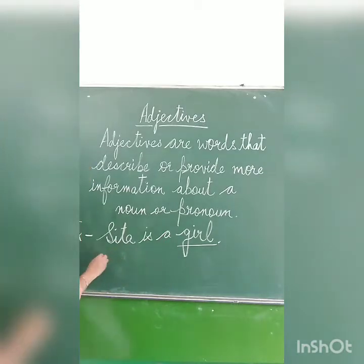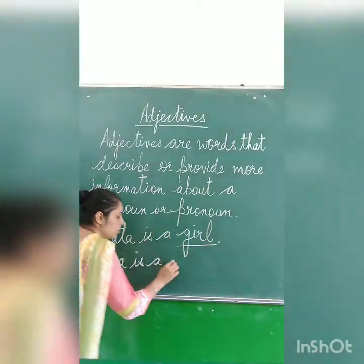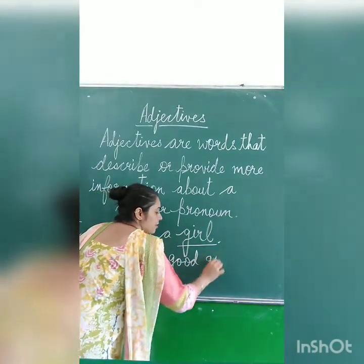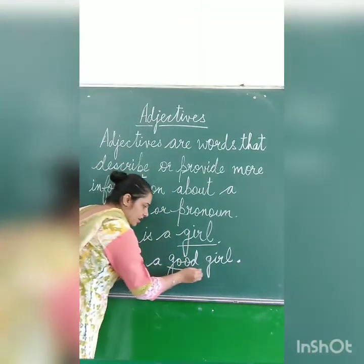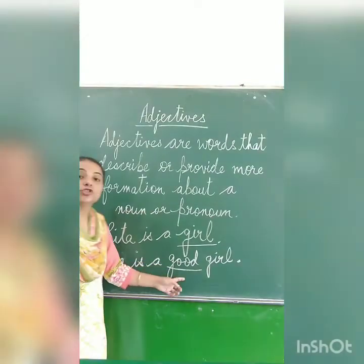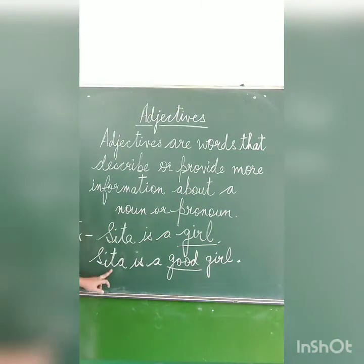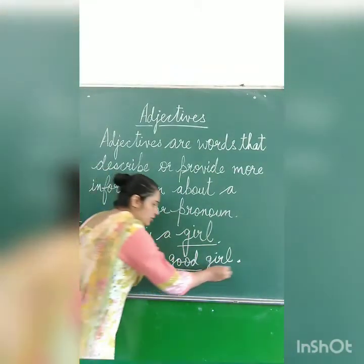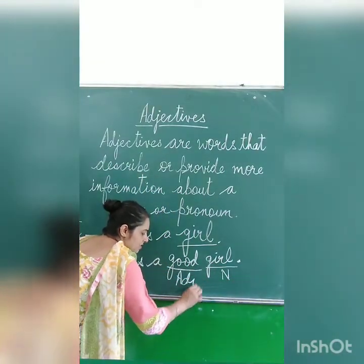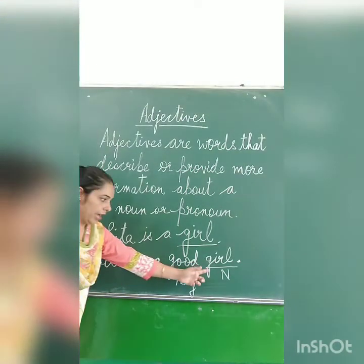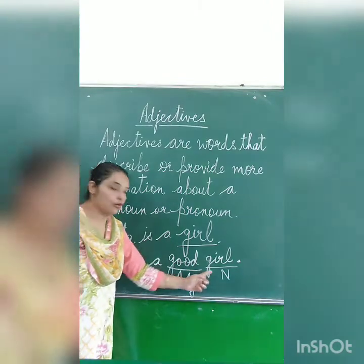But if I say, Sita is a good girl. So now you can see there is one extra word added in between, and that word is good. And this 'good' is telling the quality of Sita — what type of girl is Sita. So 'girl' is a noun, and 'good' is known as an adjective. And it is always placed before a noun.